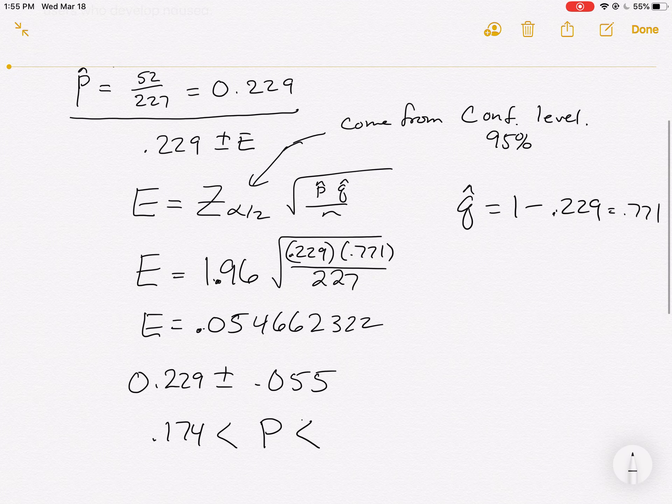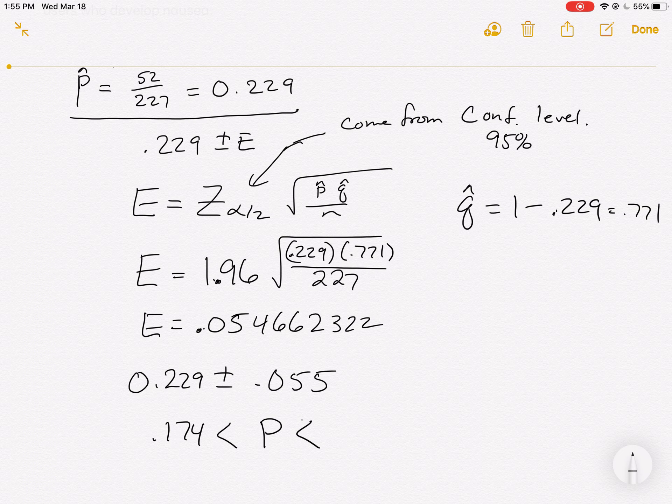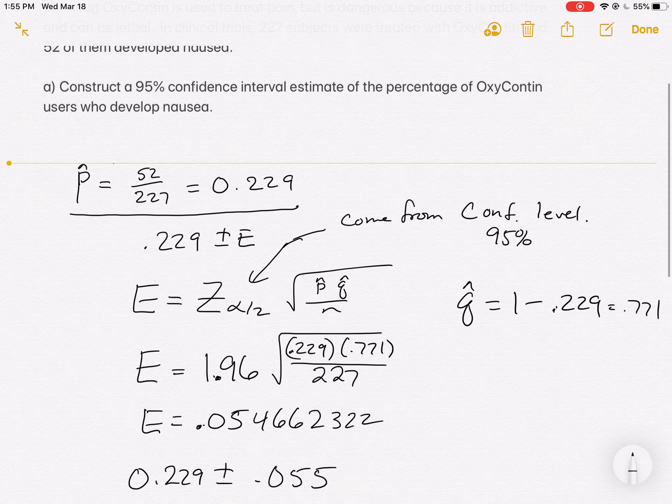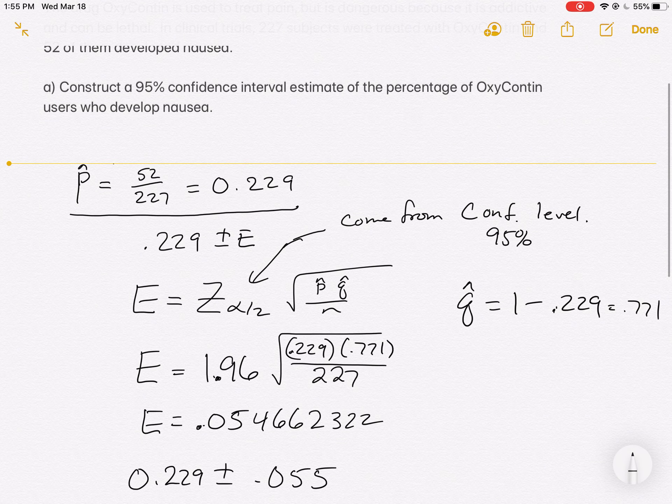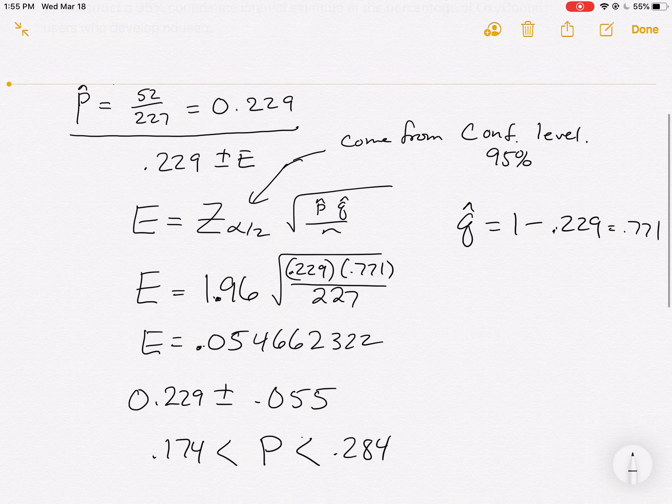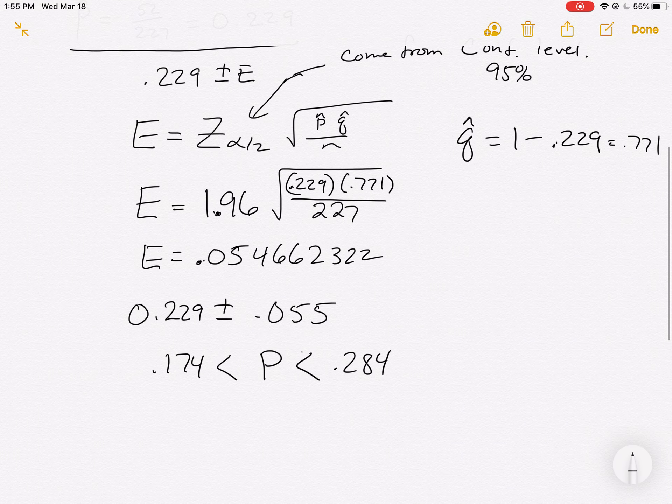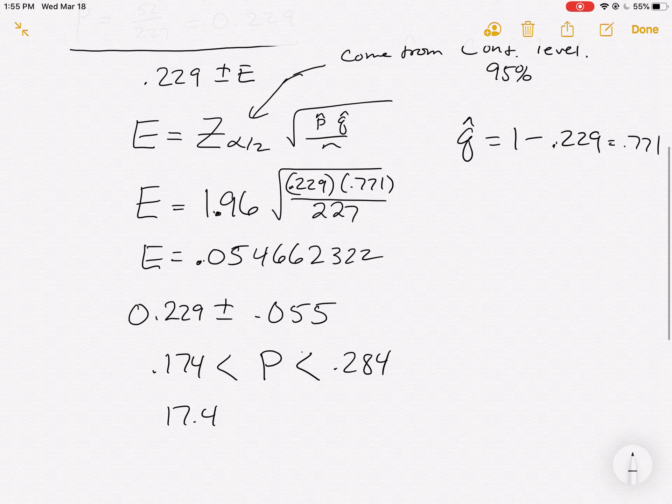And we're saying, they're going to have a nausea rate above 0.174, but no bigger than 0.284. Now, if you remember the question, this is the confidence interval for the proportion. But the question was a confidence interval for the percentage. So we should technically change this to be a percentage and say 17.4% is less than p, which is less than 28.4%. That would better answer the question.